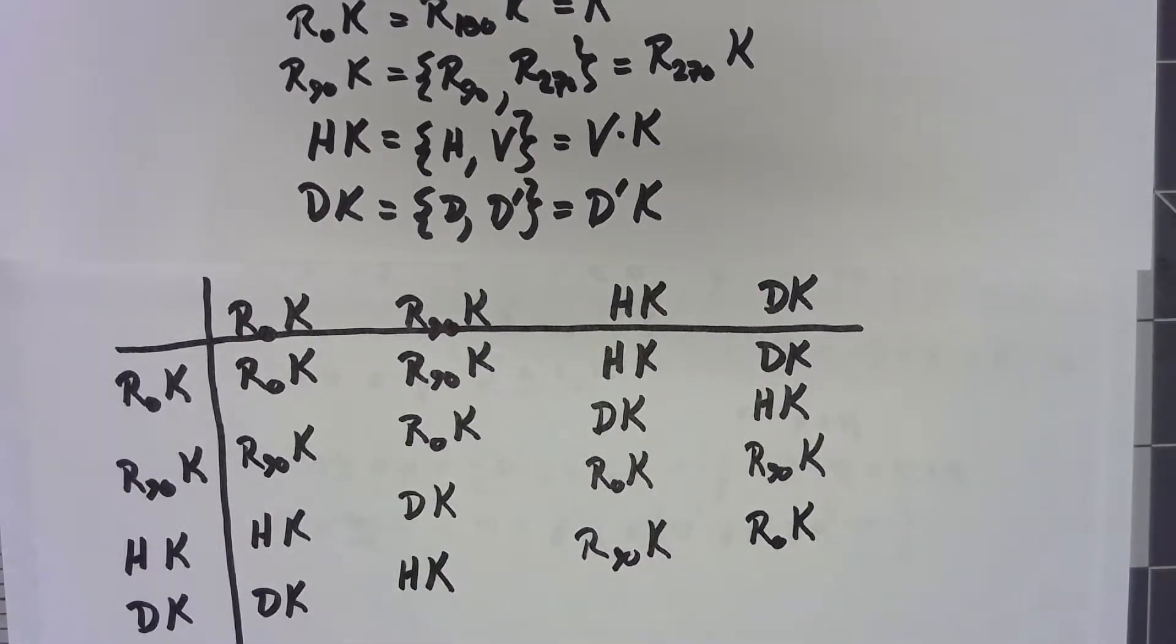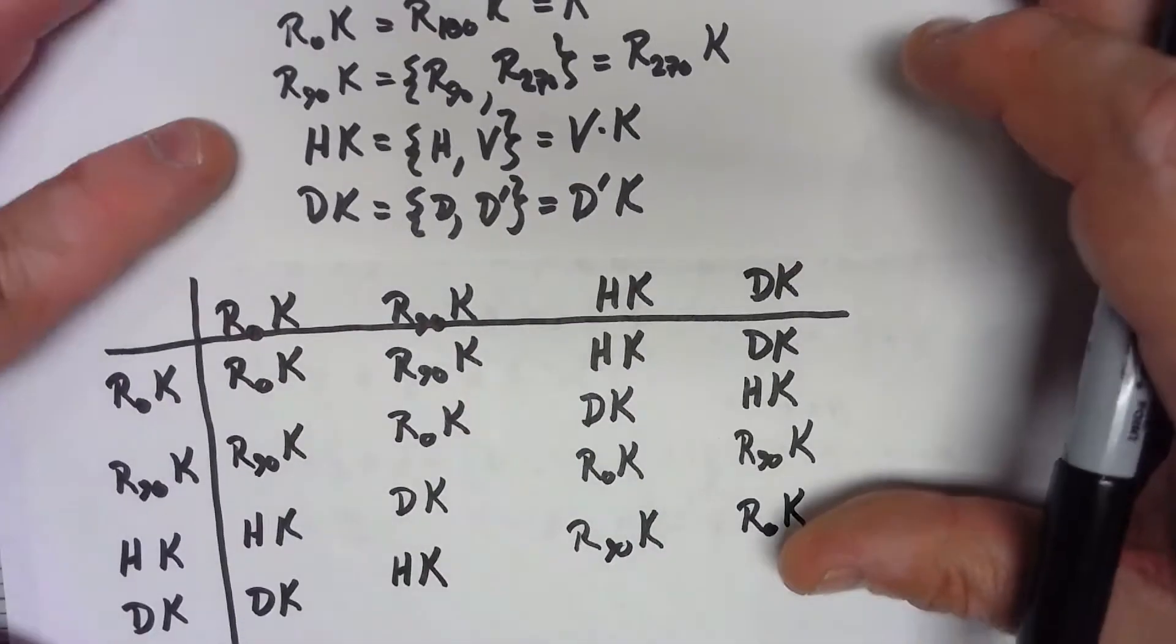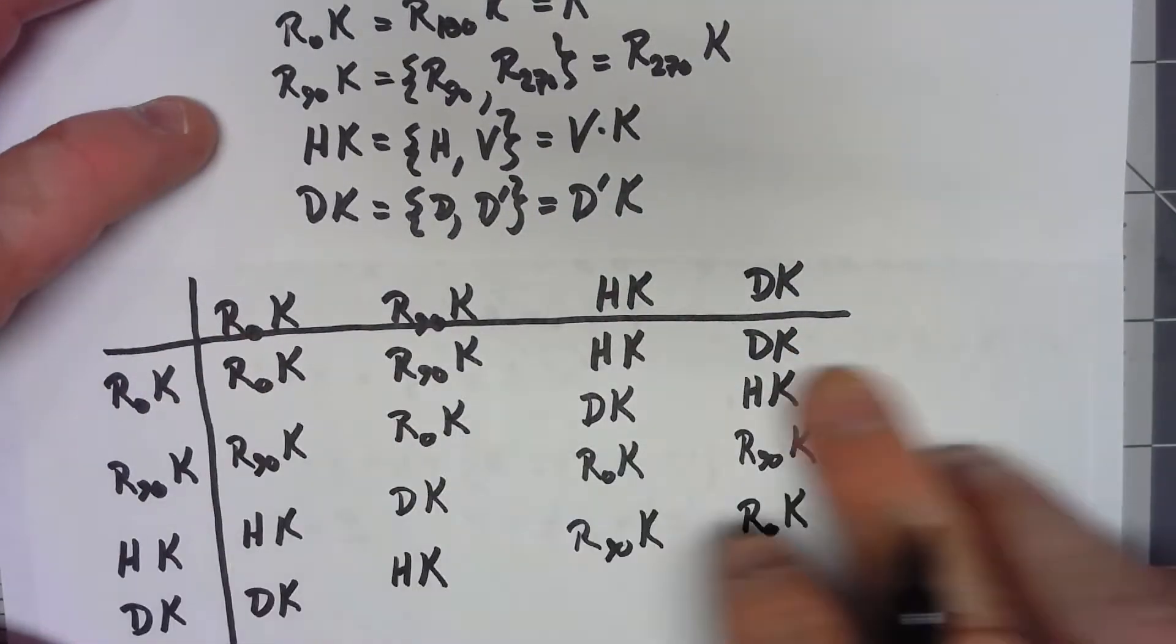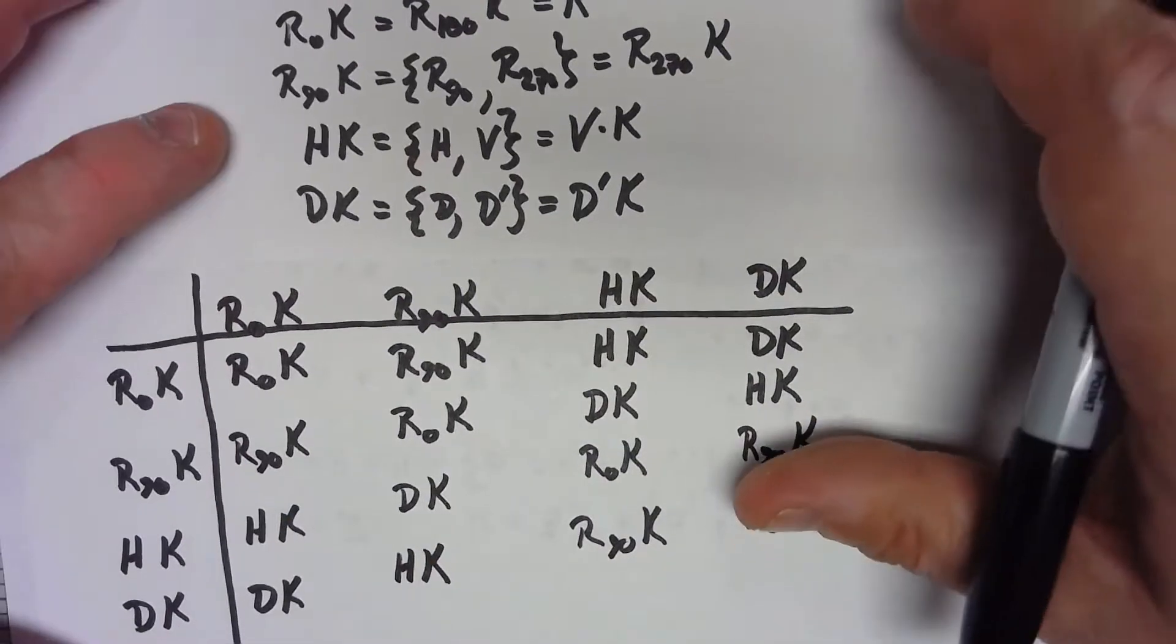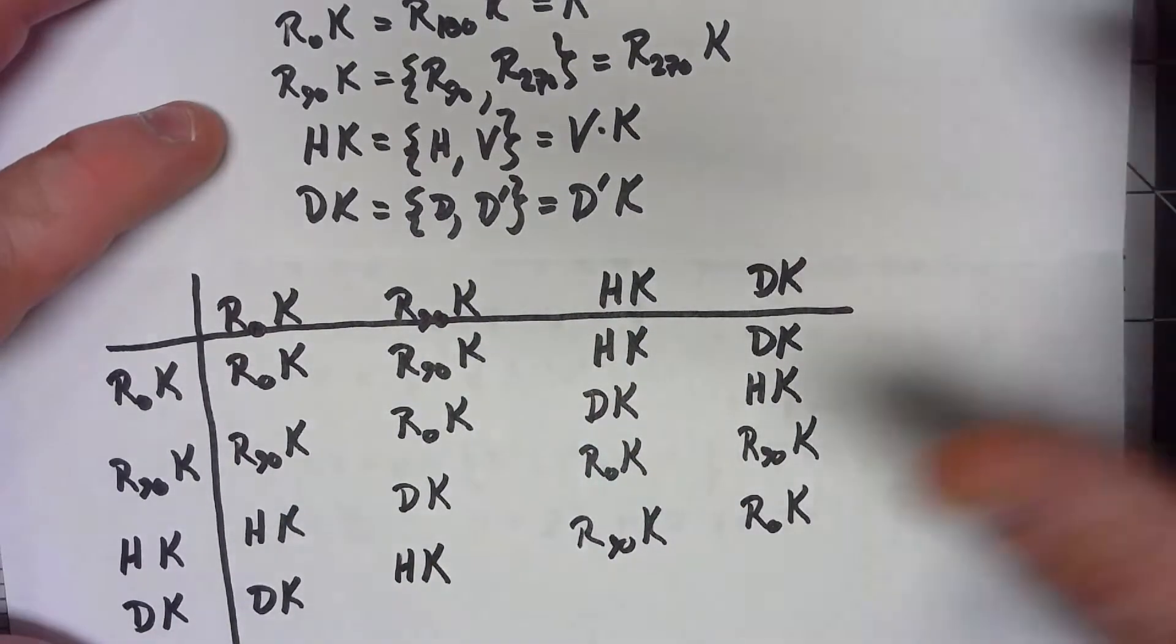Once again, an example is not proof, but looking at it we do see the R0K is the identity element, every element has an inverse, and we know that this has to be associative.